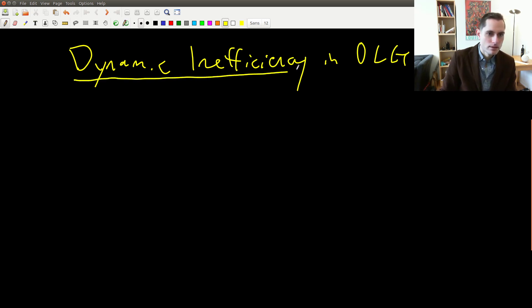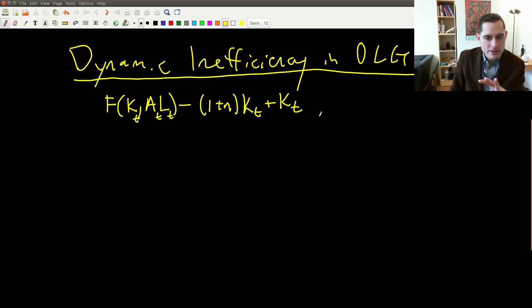Remember we had argued that the consumption in a period in the OLG model looks like this. If we assume that the growth rate of technology is zero, let's put some t's on here actually. So remember this is in steady state. And then the capital in steady state, of course, we can write this. So this is consumption, total consumption, TC, consumption of both old and young.